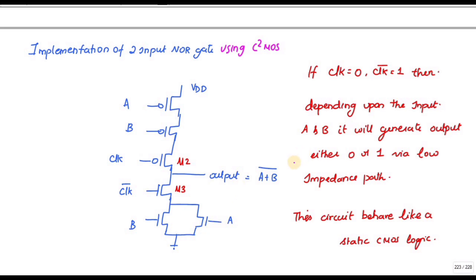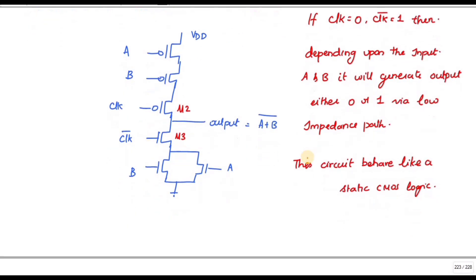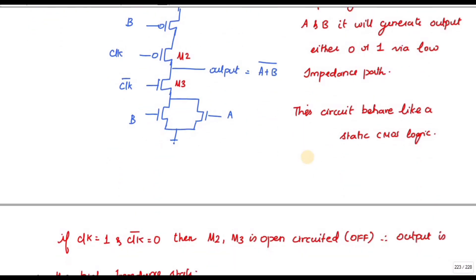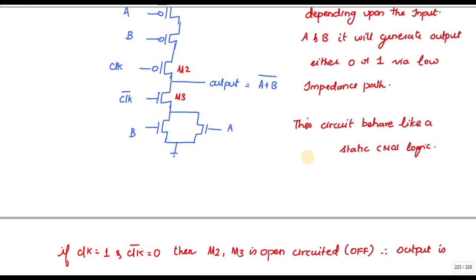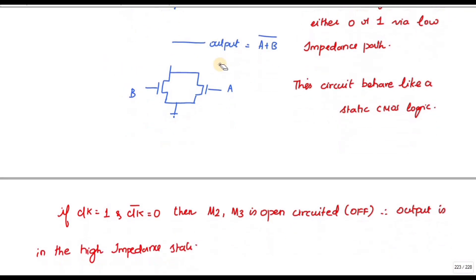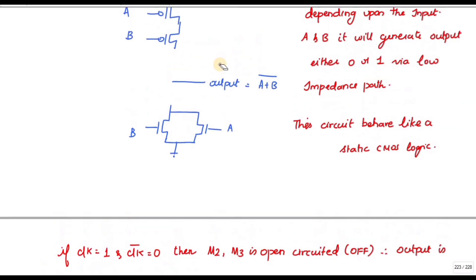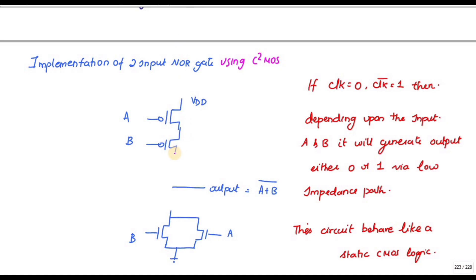When the clock is equal to one and clock-bar is zero, these two transistors are open circuit, and the output is in the high-impedance floating state. Whenever the clock is zero and clock-bar is one, the circuit behaves like a static CMOS gate.